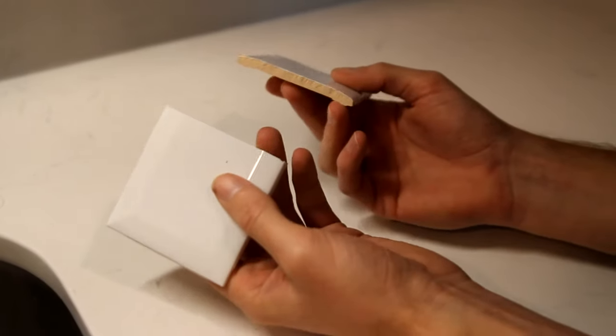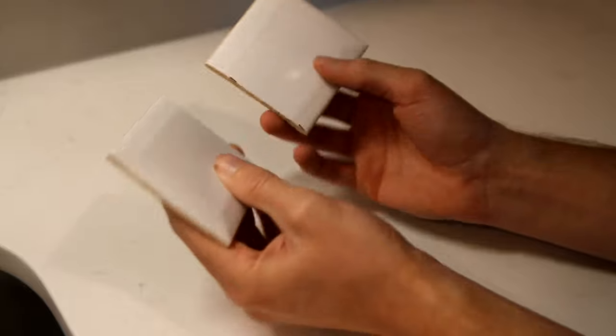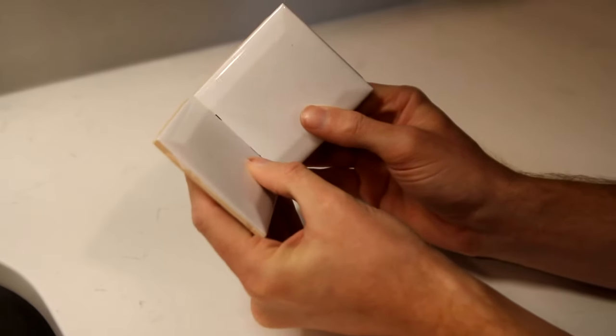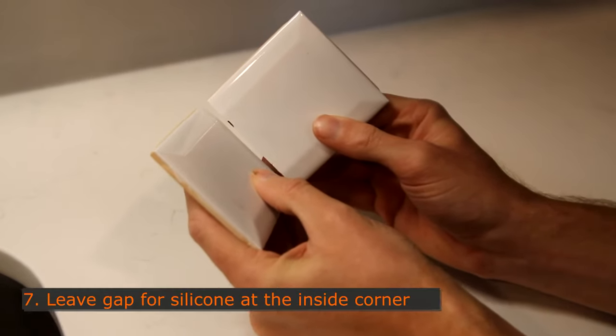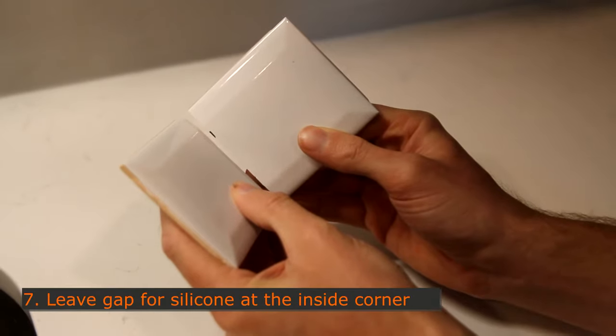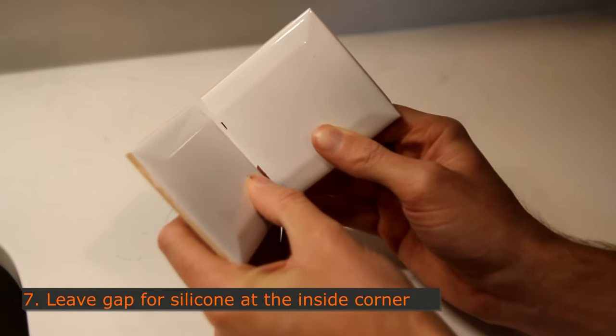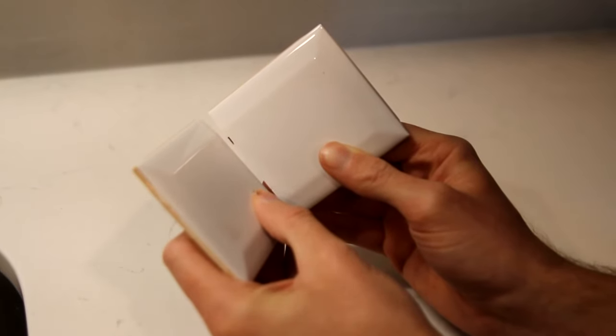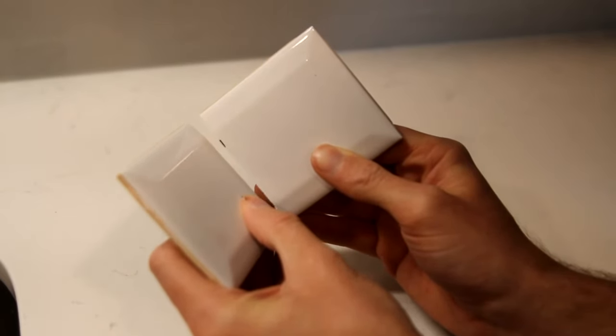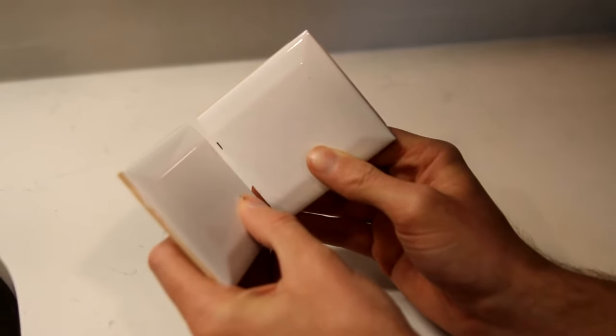On the inside corners, it's particularly tricky because you're going to have two cut edges kind of butting up against one another. So you're going to want to leave a little bit of a gap. So make sure that you measure out not only the thickness of a tile, but also a little bit of a gap there. And then instead of filling that in with grout, you're going to fill it in with silicone so it can kind of expand and contract with your house.